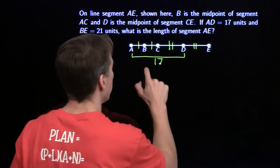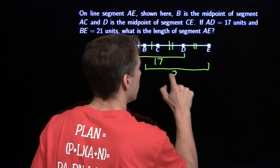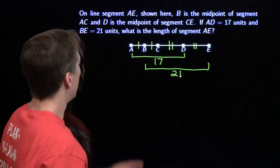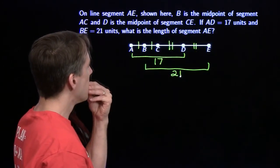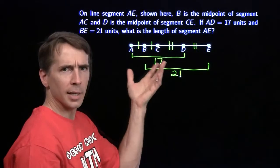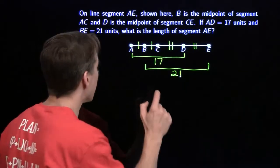And BE is 21, so this length here is 21. I want the length of segment AE. I've got a picture, I've got diagrams and all these words. I've got to build some equations. I'm going to throw some variables in here.